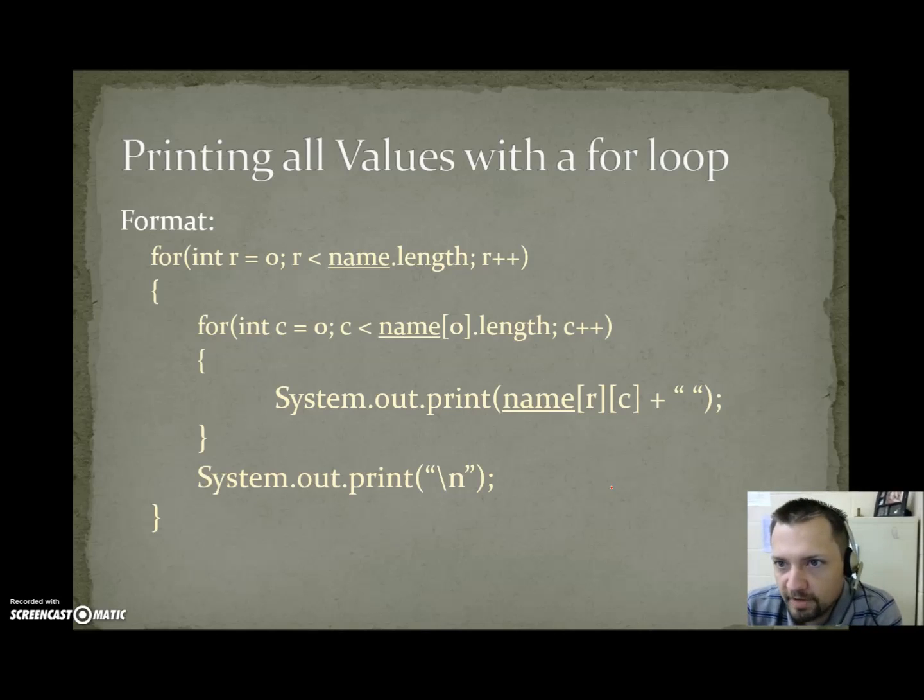If you want to print all the values with a for loop, you write a for loop to go through all the rows. Then you write a for loop to go through all the columns in that row. You would print the name of the array bracket R bracket bracket C bracket, system.out.print new line after that column finishes. This isn't going to make a lot of sense until we see an example, so I'm going to walk through the next example. But you do want to write this format down so you have it if you ever need to print a 2D array. Alright, let's go look at the example for it.